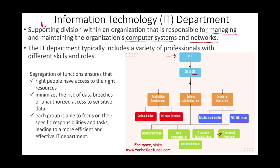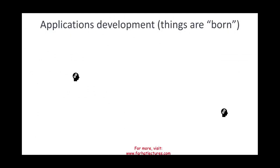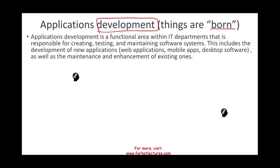Starting with application development — this is where things are born, meaning created. We're developing the application. Application development is a functional area within IT that's responsible for creating, testing, and maintaining software systems. This includes developing new applications — web applications, mobile applications, cell phone applications, desktop applications — as well as maintenance and enhancement of existing ones.